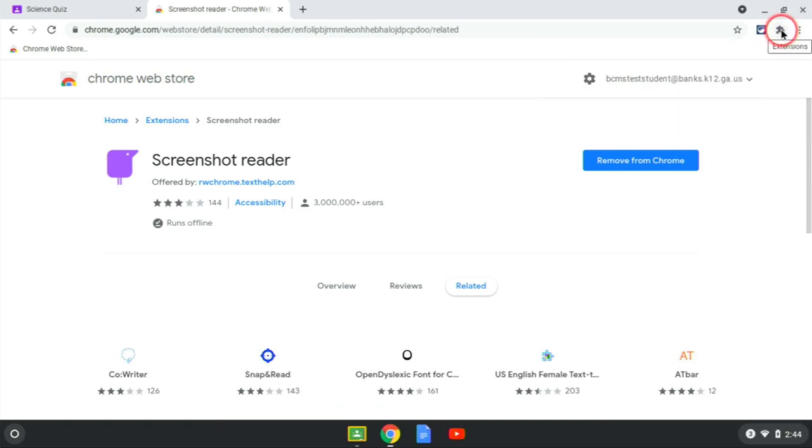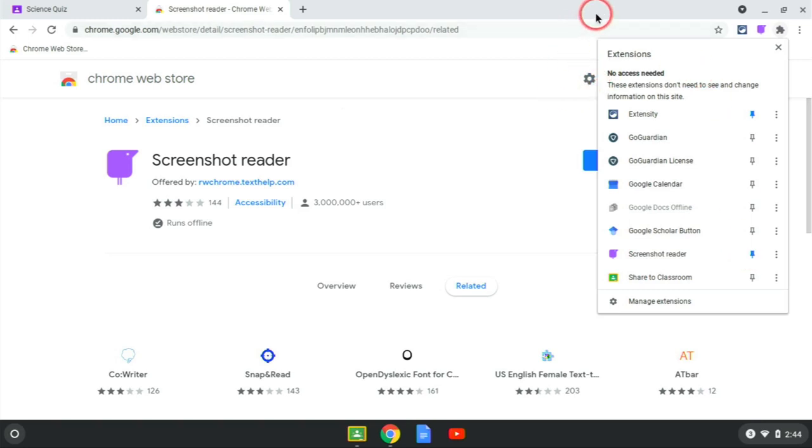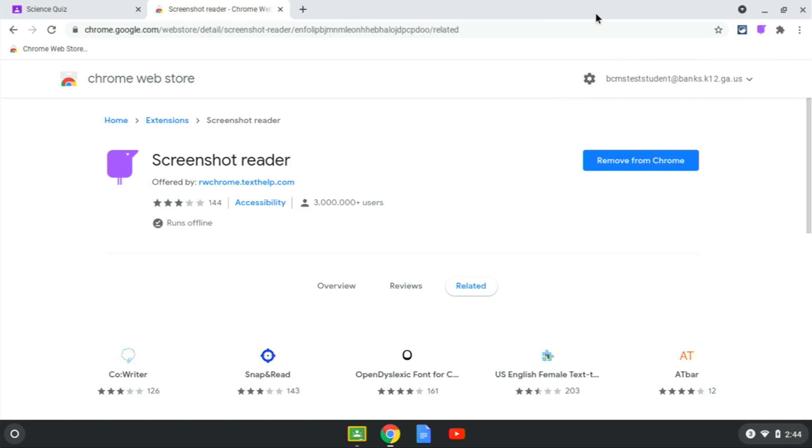Now click on the puzzle piece and click the pin next to Screenshot Reader so that it turns blue and pins itself on the top bar. That's how you install Screenshot Reader.